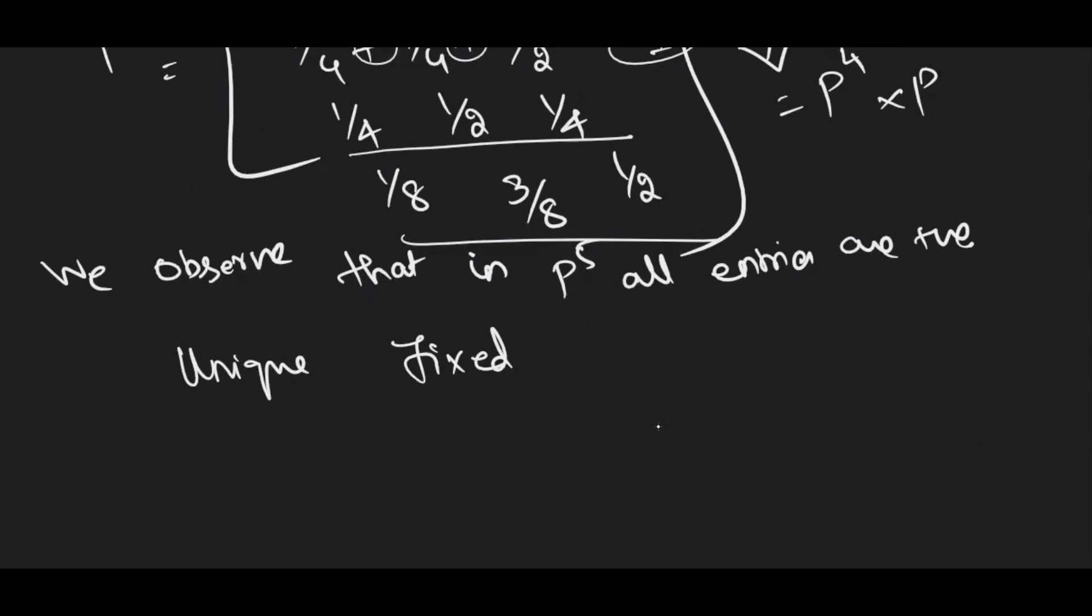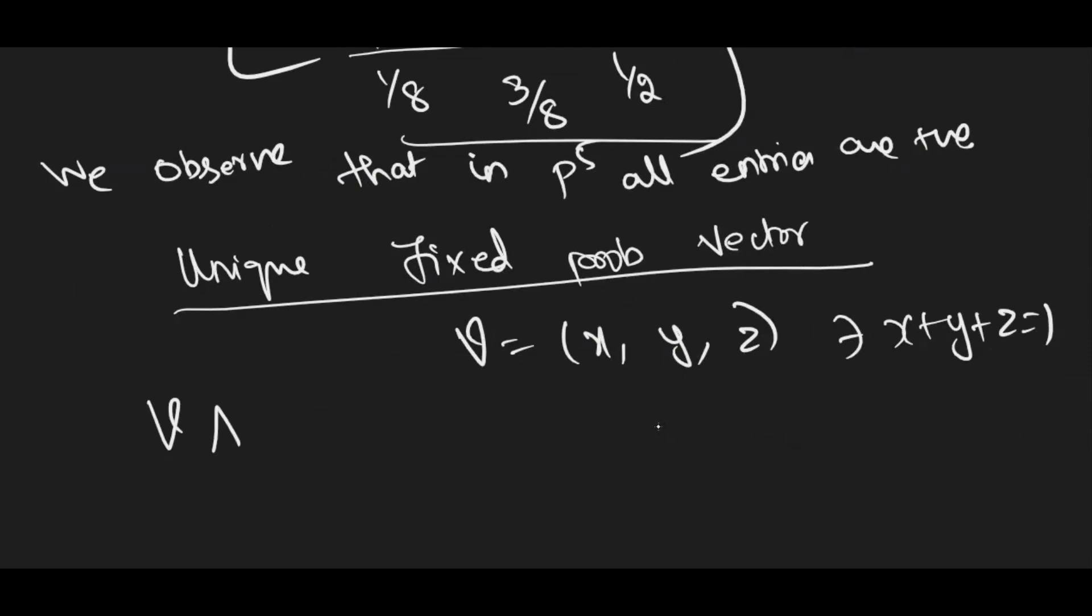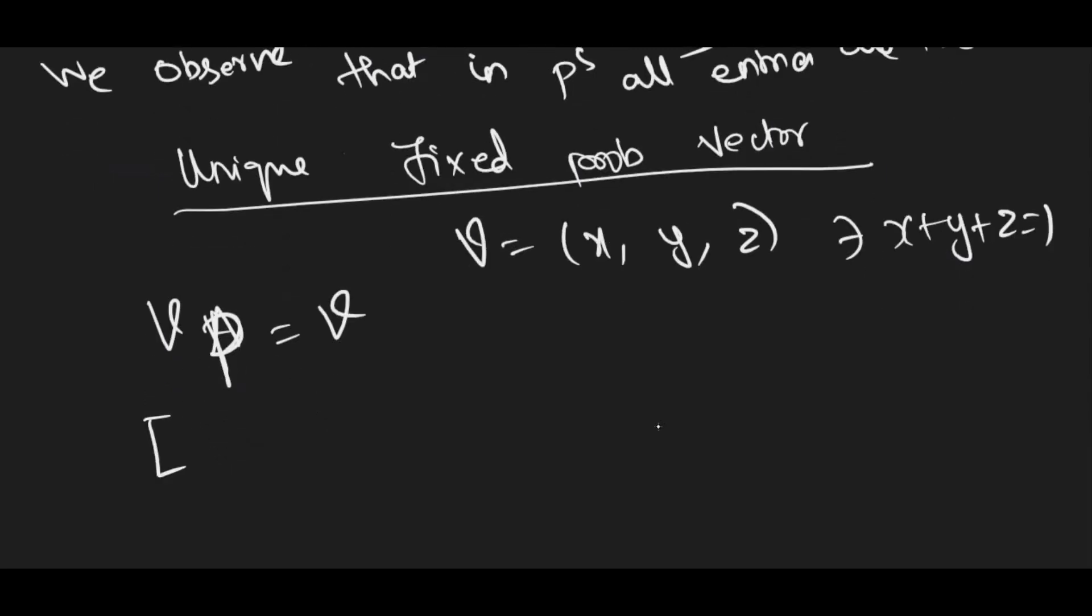In case in this problem, if they ask, find the unique fixed probability vector, remember, already we did unique fixed probability vector for 2×2 in your previous video. So in that, you will take v as [x y z] such that x+y+z = 1. So and then what is the condition? v×A = v, or in this problem, we have named it as P, the probability. So x, y, z and the probability 0, 1, 0, 0, 0, 1. This is given in the question, right? 1/2, 1/2, 0 and then right hand side x, y, z.